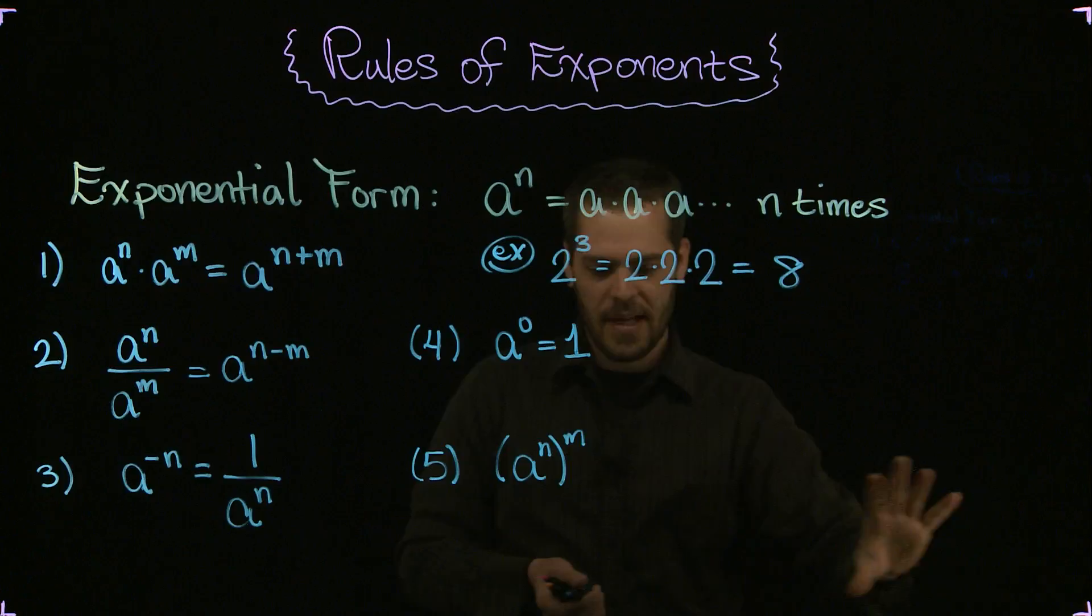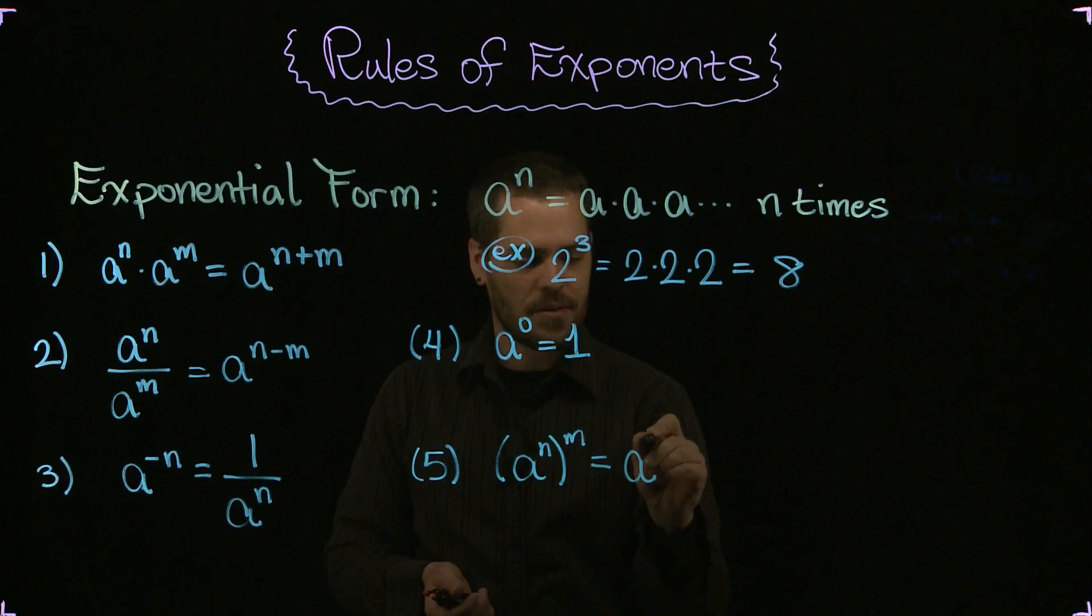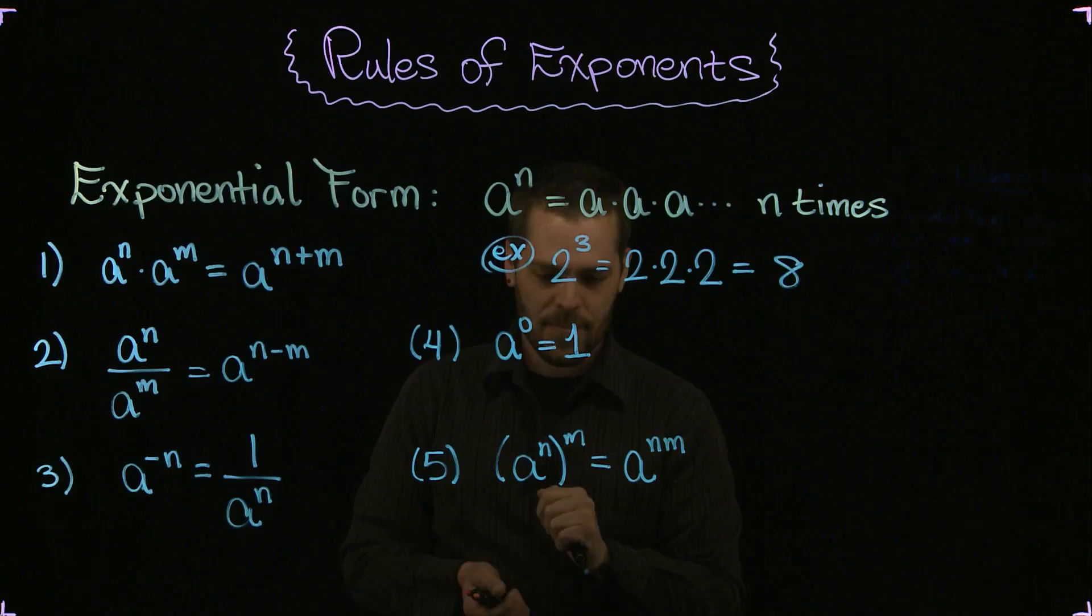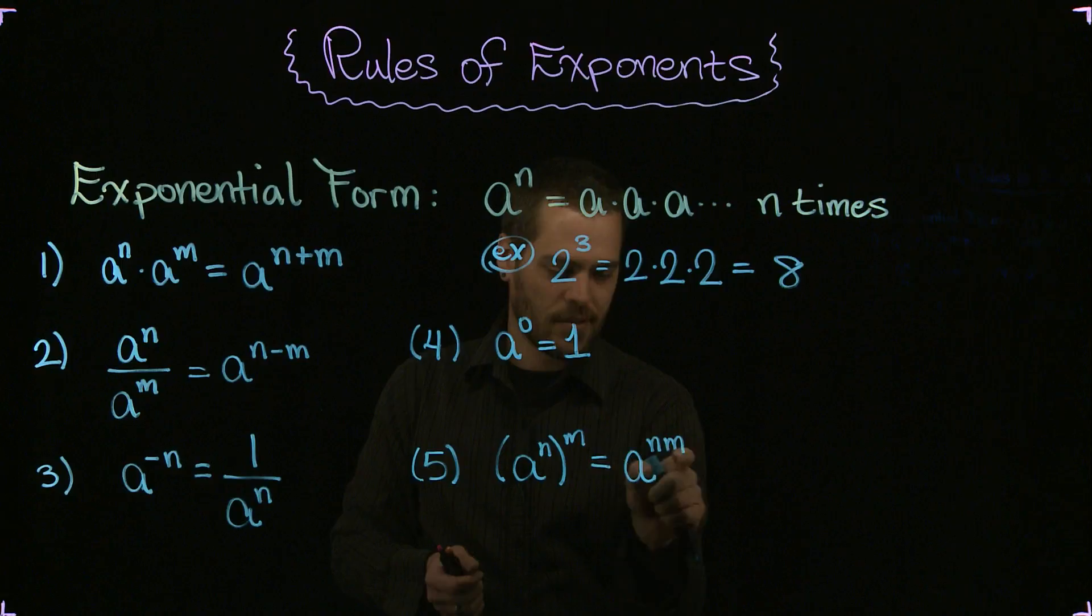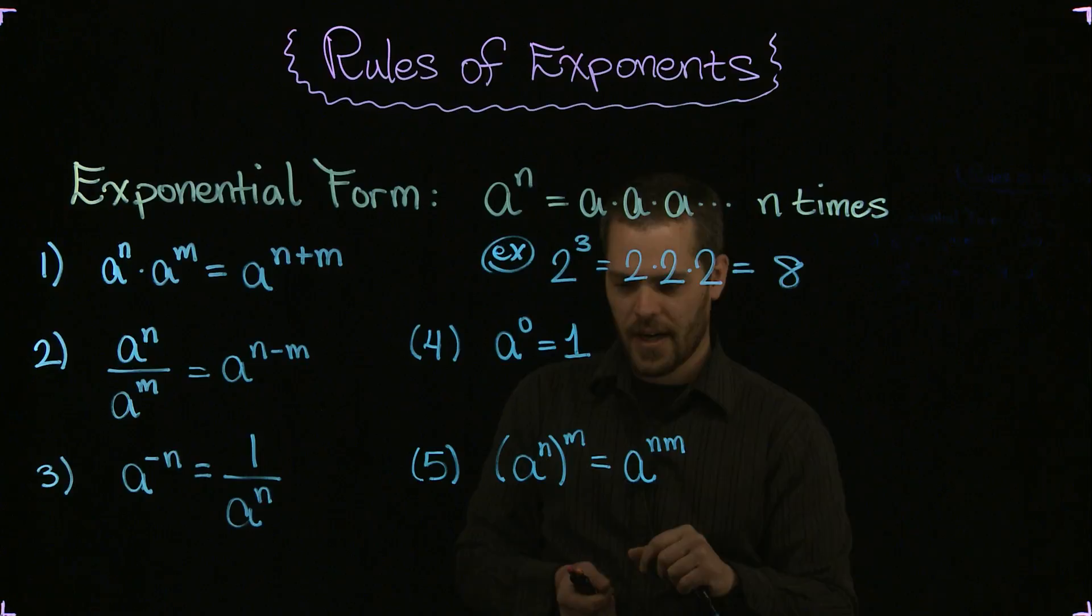And when you expand it out, you can see that it's true that this is equivalent to a to the nm power, where I just multiplied these two. So when you have an exponential expression in the parentheses raised to an exponent, you can multiply the outside exponent times the inside exponent to get the final exponent here of the base a. So that's rule number five.